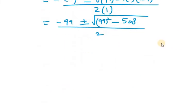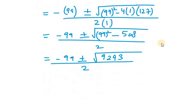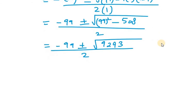-99 ± √(99² - 508 will be 9293) over 2. When you solve this you will get 9293 over 2. Now what we need to do is take the square root of 9293.